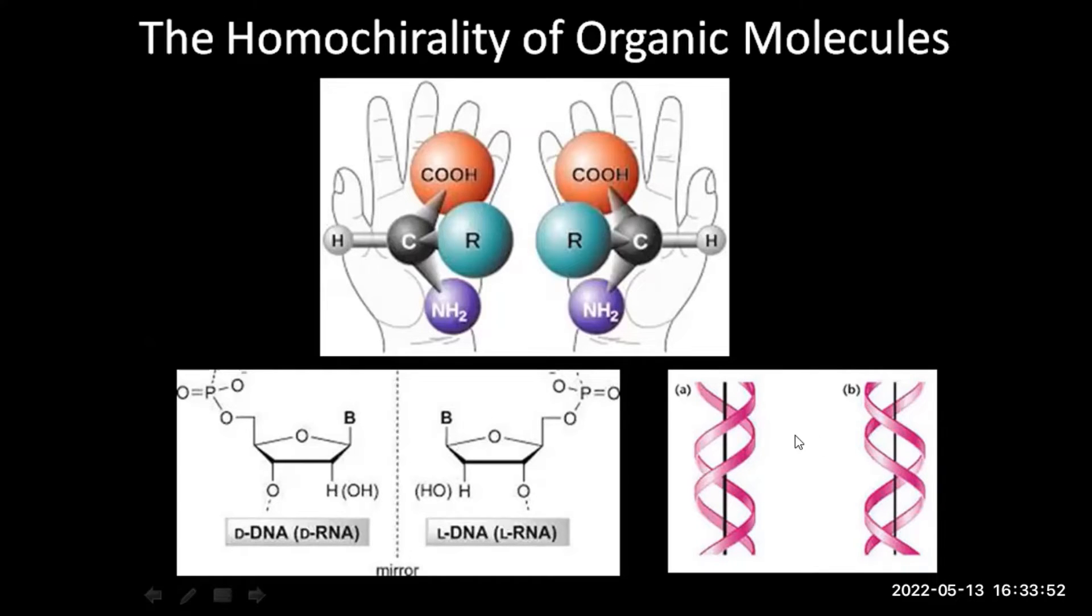But the curious thing is that in nature, in fact, all of the DNA are right-handed and all of the amino acids are left-handed. So that's a curious fact. So the question is how the homochirality of life came to be.